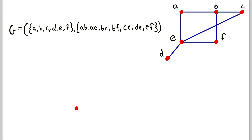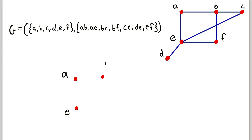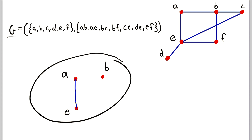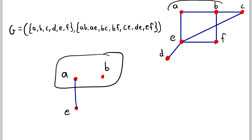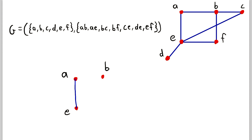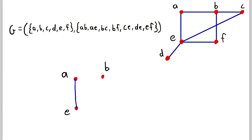Let me draw these vertices first. We'll use three of the vertices for our subgraph. This is E, this is A, and this is B. And then the edge we'll include in our subgraph is this one here. This is a subgraph of G because every vertex and edge in this graph is also in G, but it's not a vertex-induced subgraph. What makes it not a vertex-induced subgraph is that there are two vertices in this subgraph that are not adjacent, but are adjacent in the original graph.